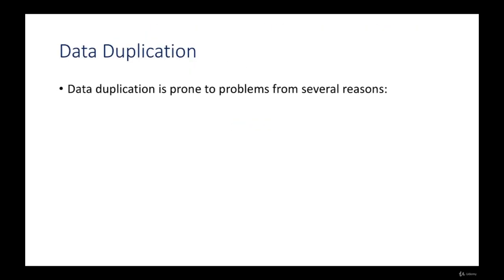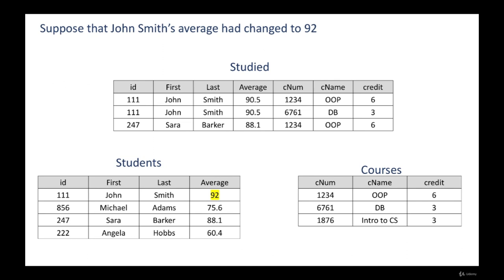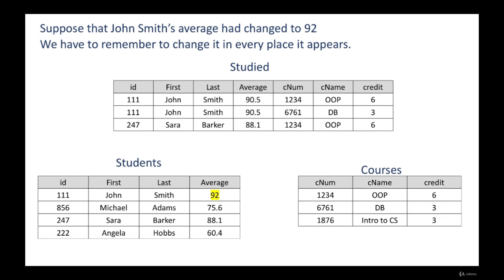Now let's talk about data duplication. Data duplication is a situation where we save one piece of data in more than one place. It is prone to problems: first, we store the same items many times, using a lot of redundant storage space. Another problem is that we might create contradictions in the data — two contradicting facts about the same data — and we wouldn't be able to decide which is true. For example, suppose John Smith's average changed to 92. We have to remember to change it in every place it appears.